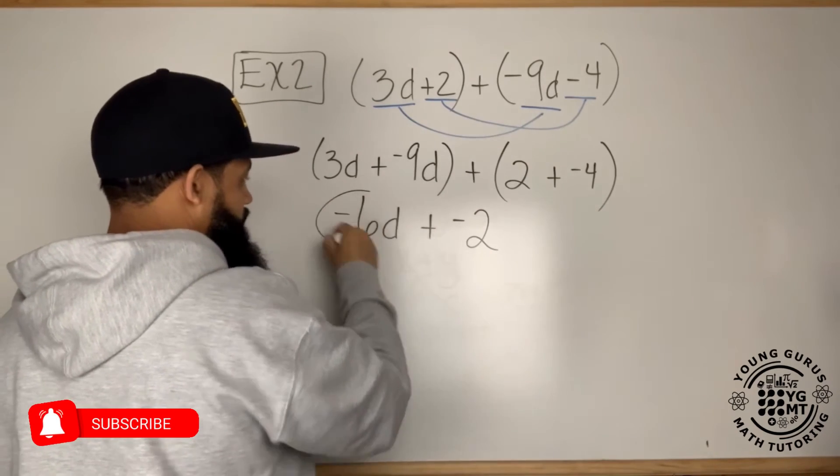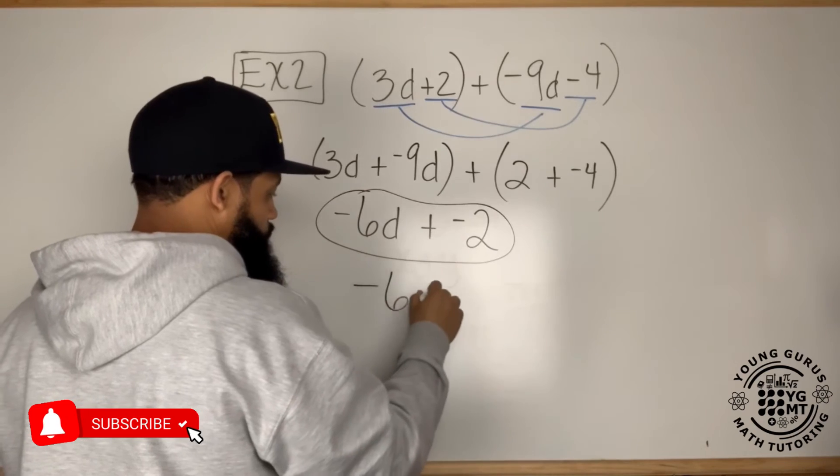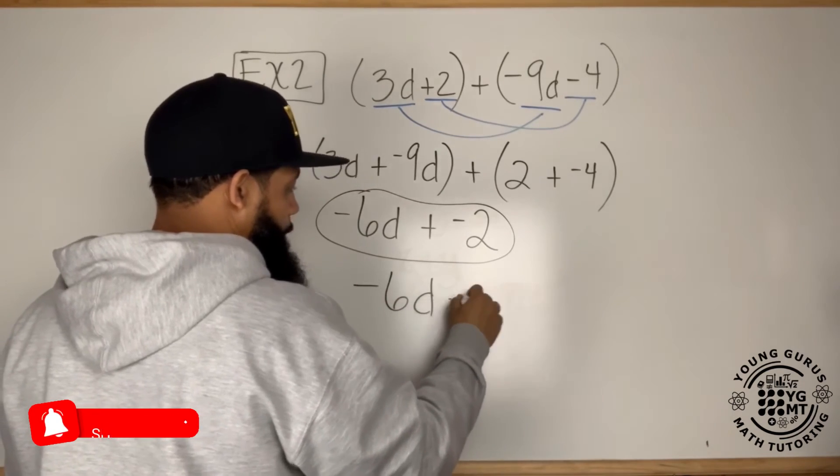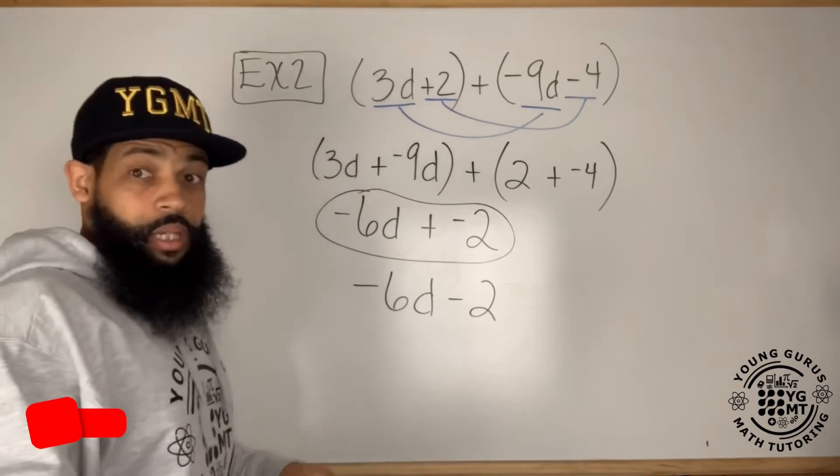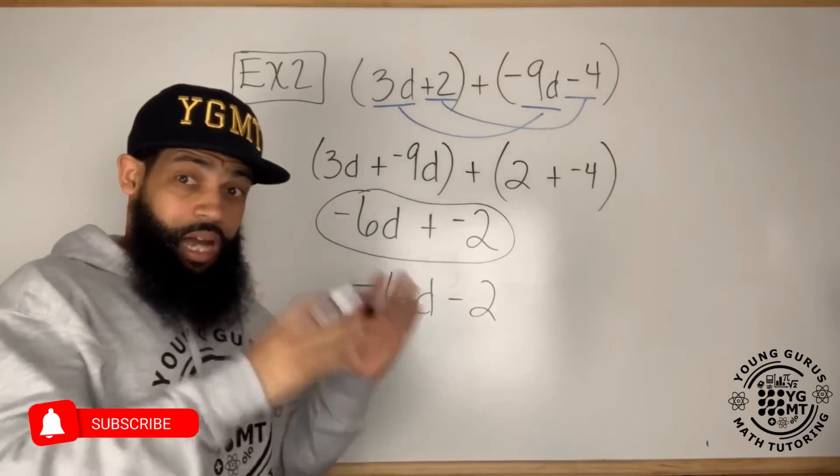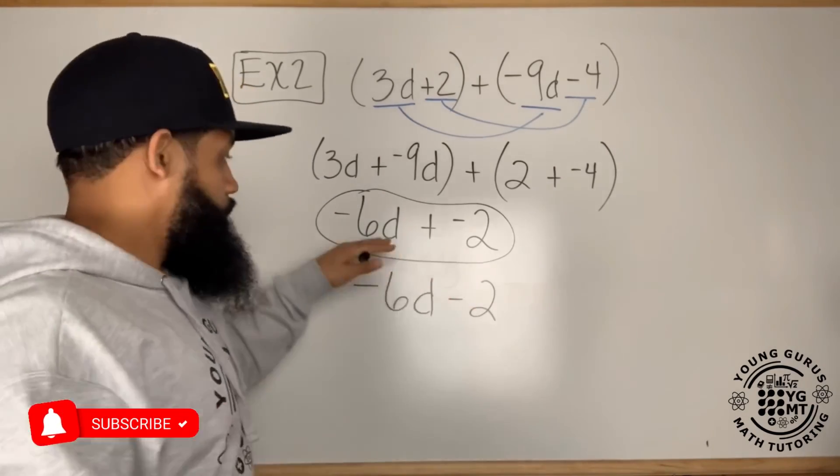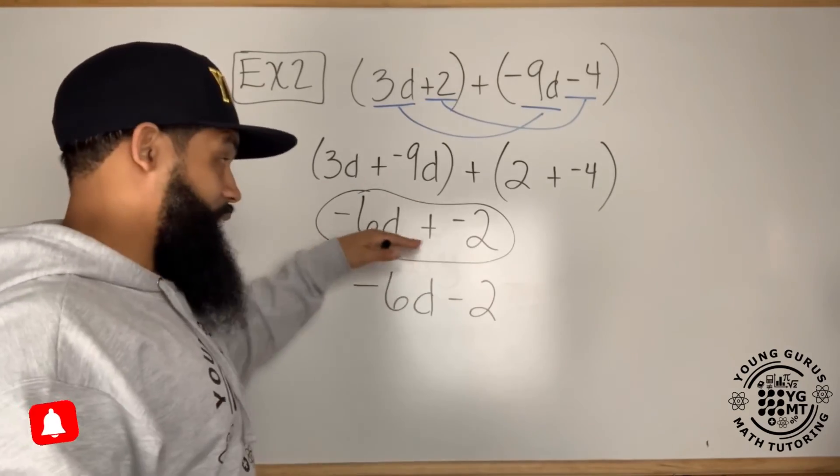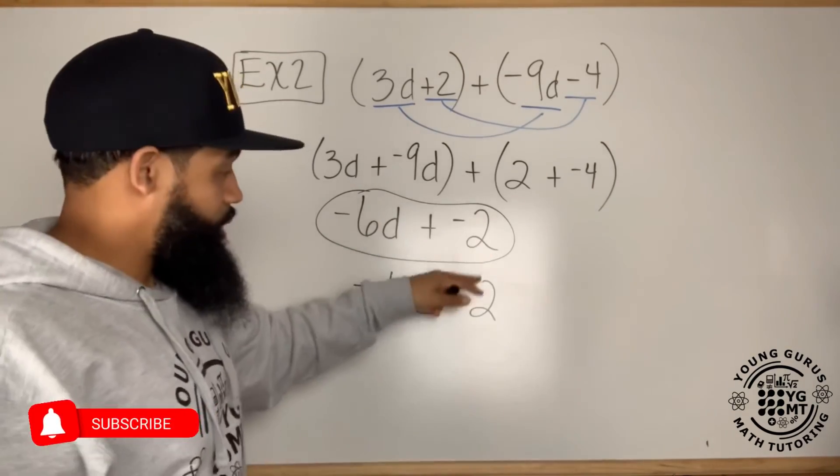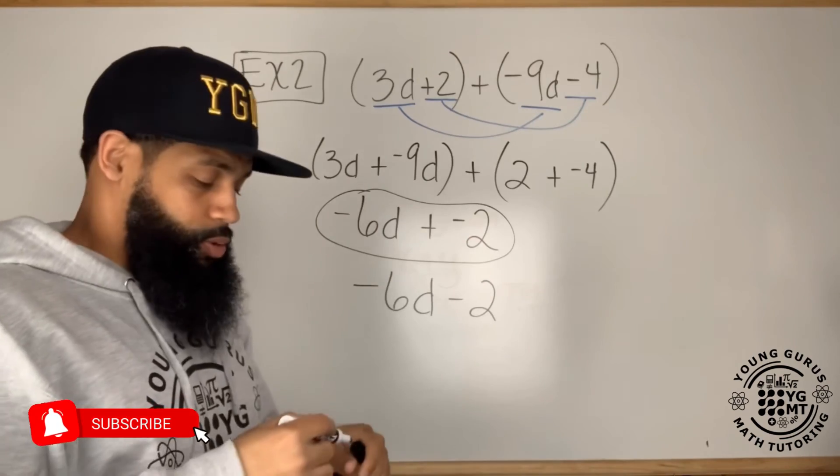this answer works, but I can also write this answer another way and say negative 6d minus 2. Subtraction is adding the opposite of a number. So this is negative 6d minus positive 2, but that also is the same thing as negative 6d plus negative 2 because the definition of subtraction.